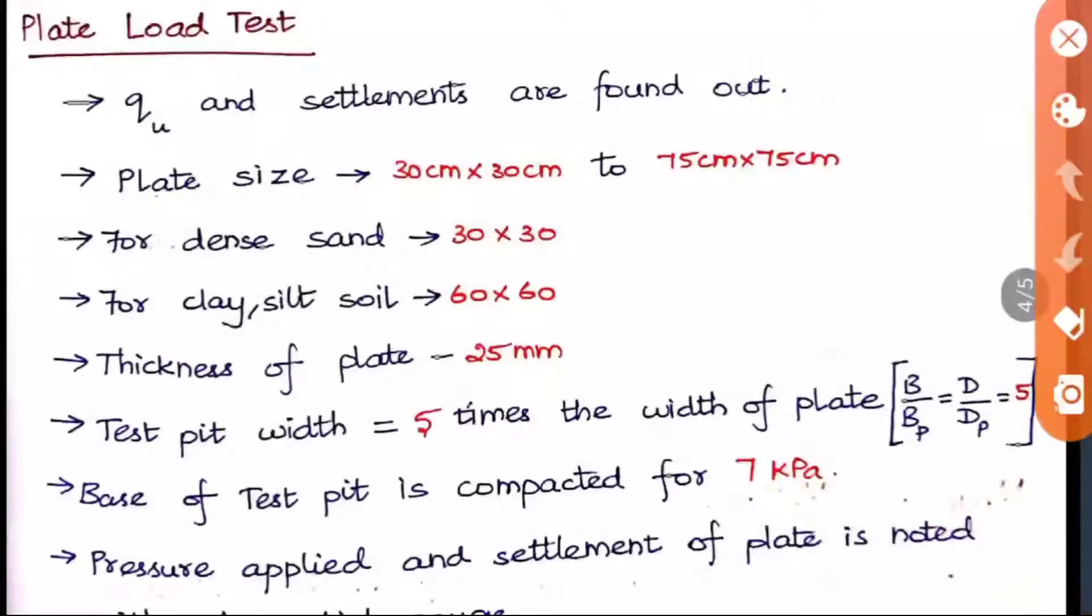The plate size will be normally 30 cm x 30 to 75 x 75 cm. For dense sand it is 30 to 30 and for clay silty soil it is 60 to 60. The thickness of plate is generally 25 mm. The test pit width should be 5 times the width of the plate, that is B by BP should be or D by DP should be equal to 5.